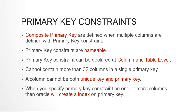Primary key constraints are nameable — you can give names to them. Primary key constraints can be declared at the column level or at the table level. At column level you can declare a simple primary key for one column. At table level you can include multiple columns. Also, you cannot have more than 32 columns in a composite primary key, and one column cannot be both a primary key and a unique key simultaneously.